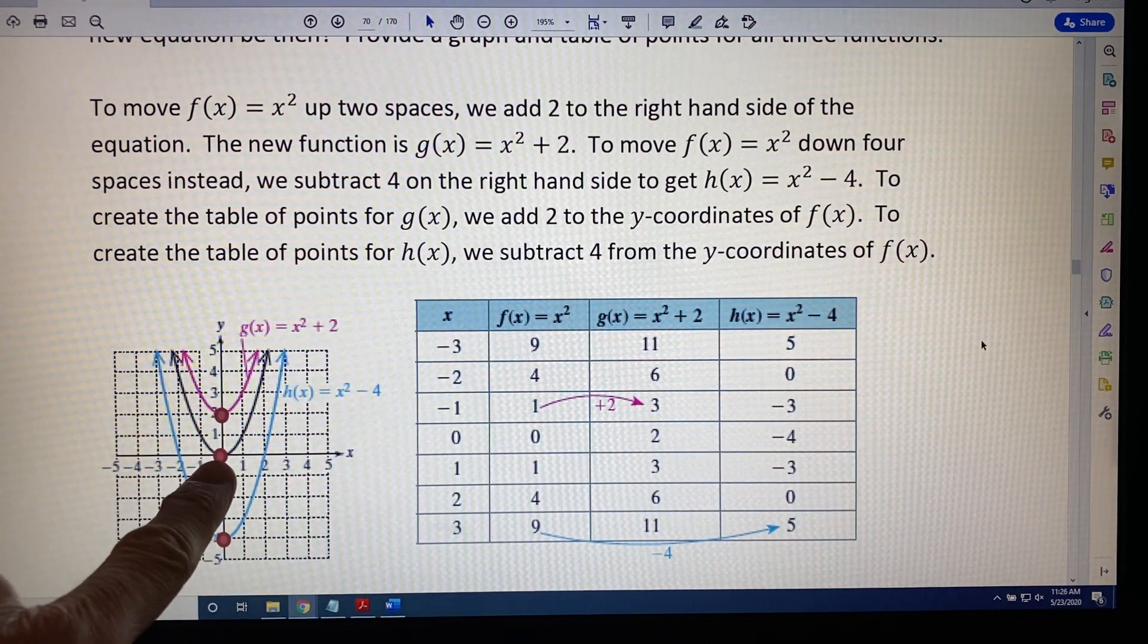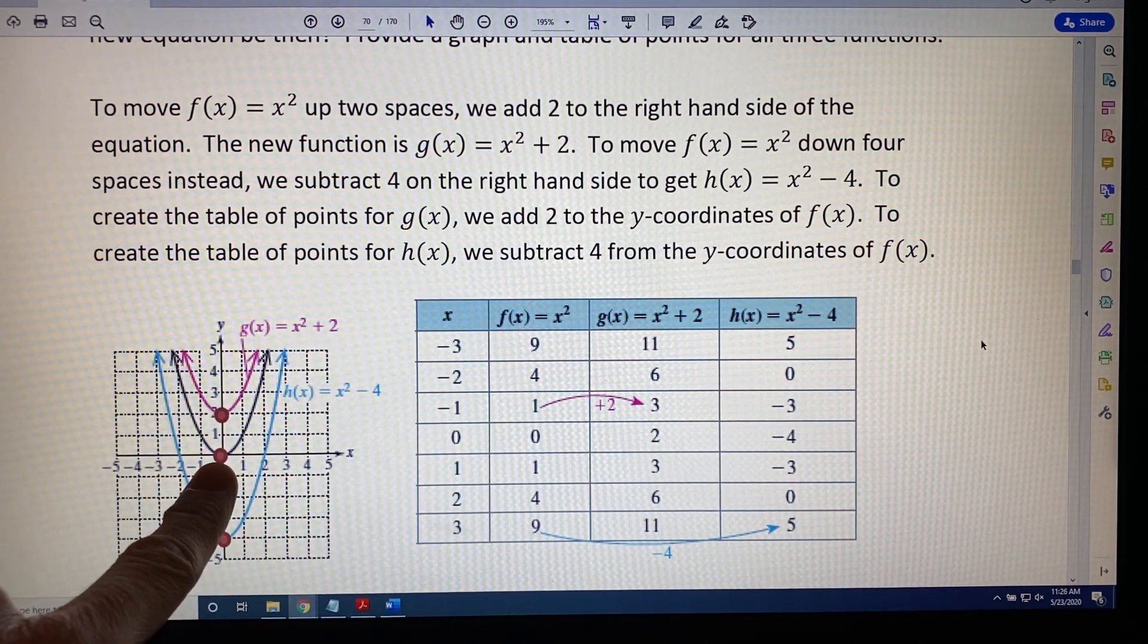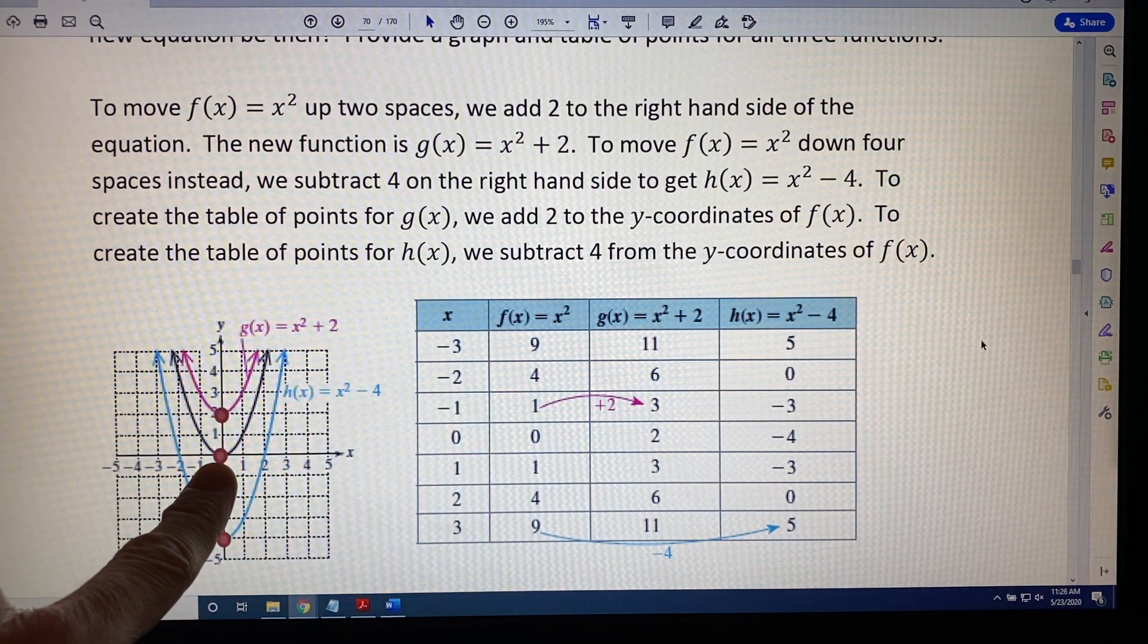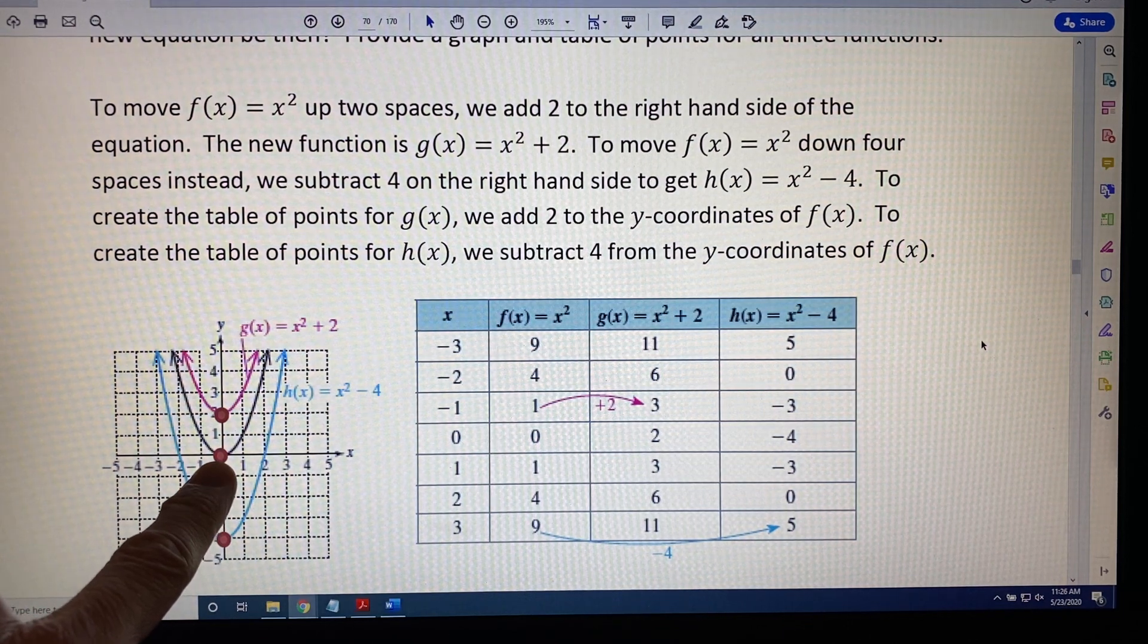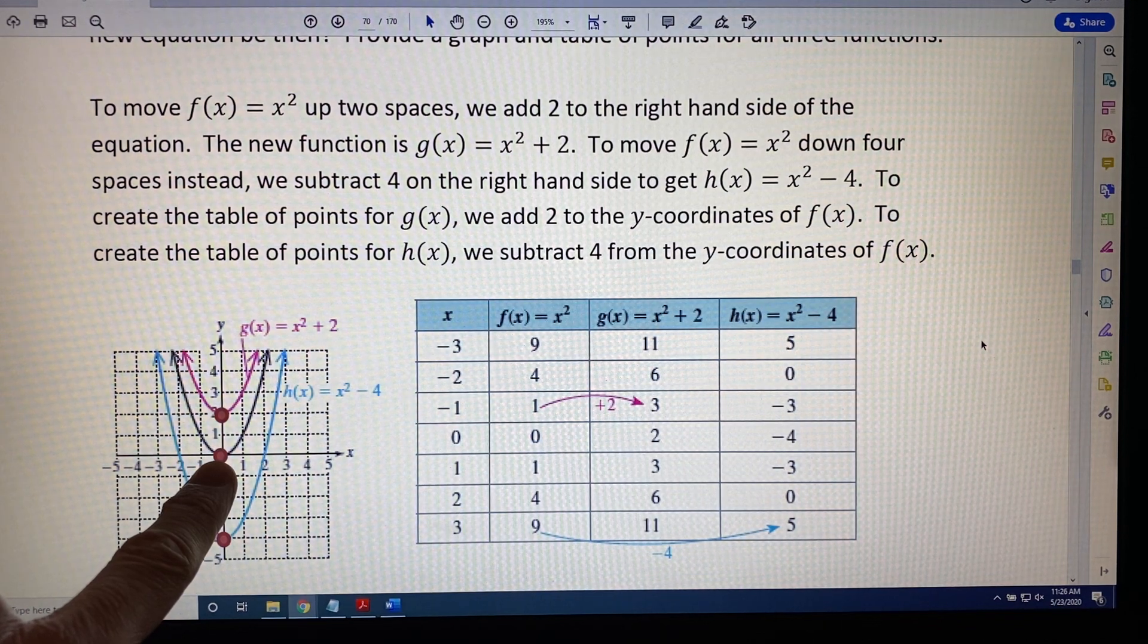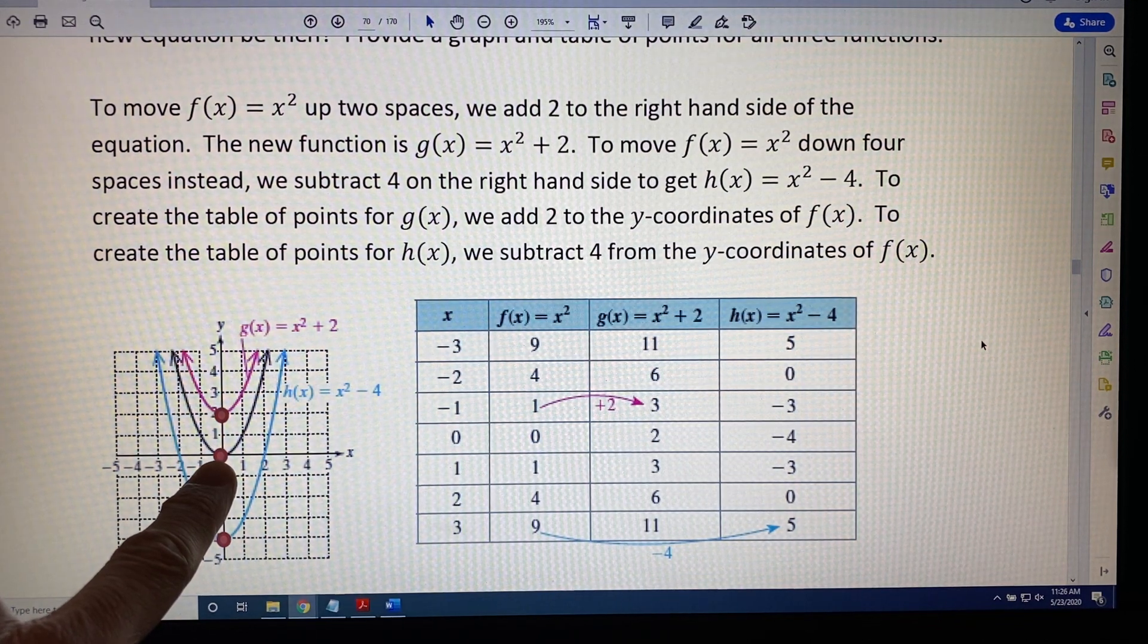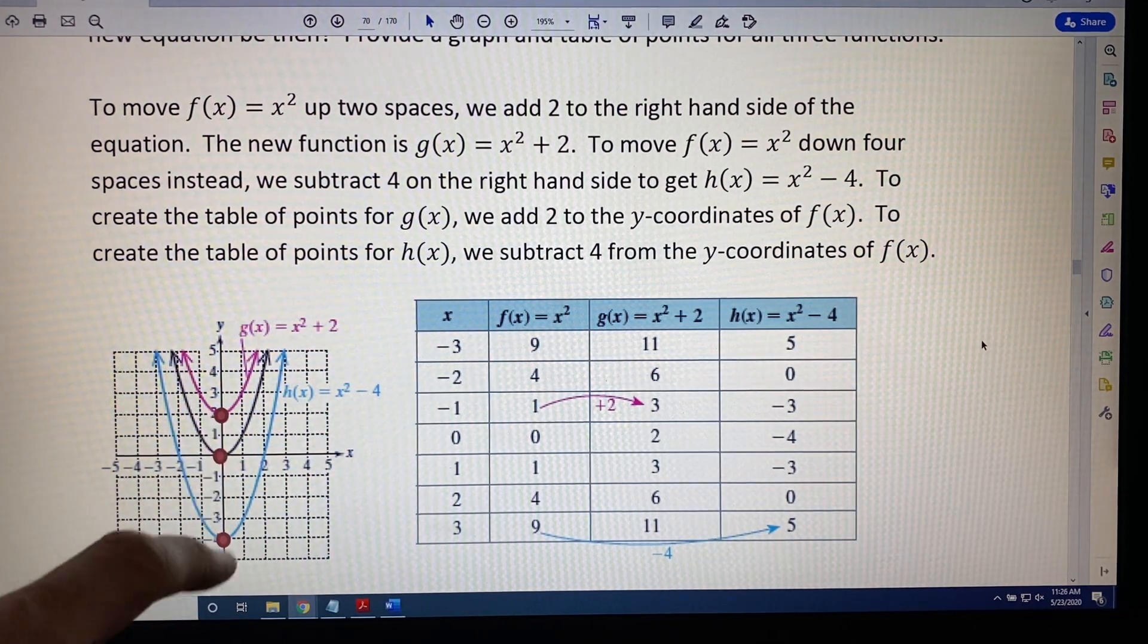First, let's look at the graph. So this right here, the black curve, is the parabola f(x) = x². That's our square function. To create g(x), we said we wanted to move it up two spaces. And indeed, that's what we see. If you take each of the points from the black function and move them up two spaces, it will create the pink function, g(x) = x² + 2.